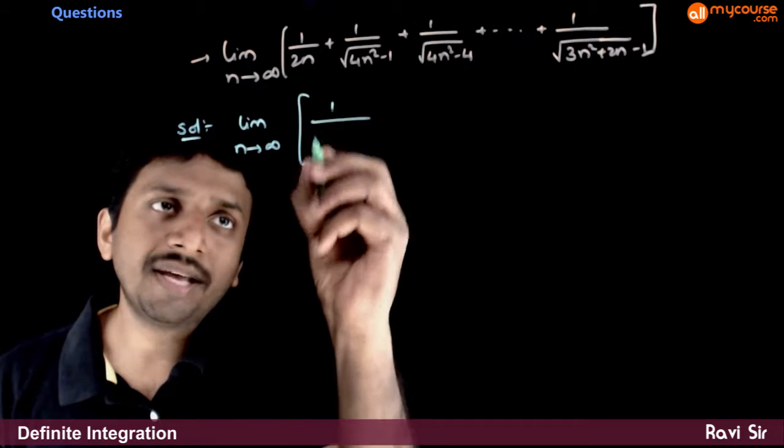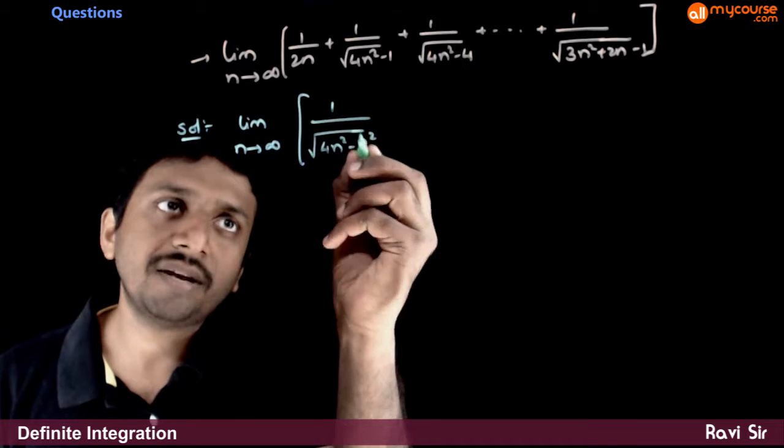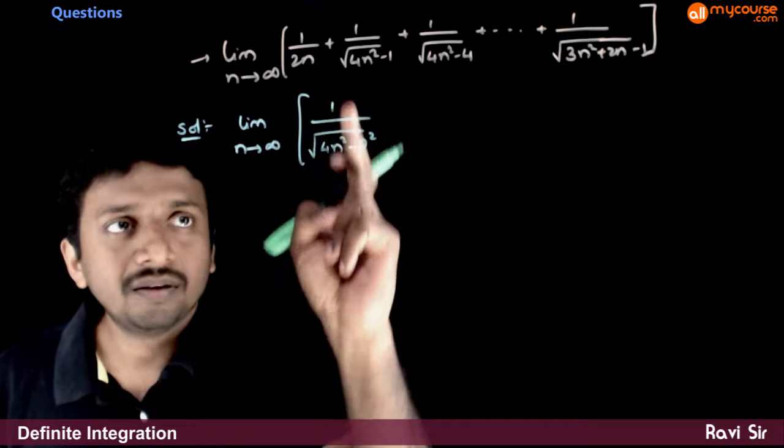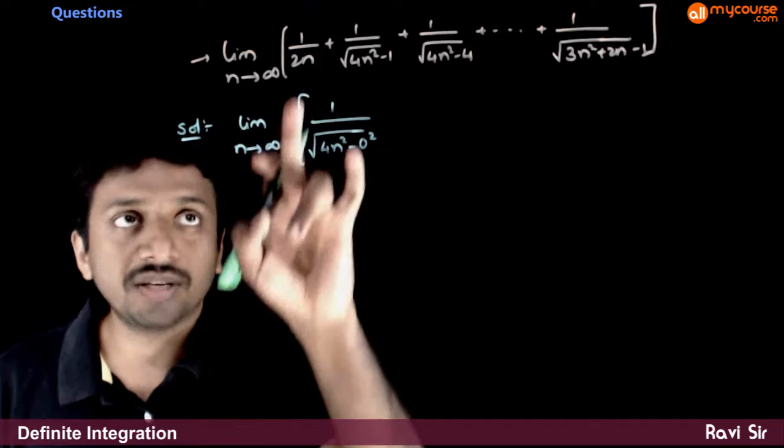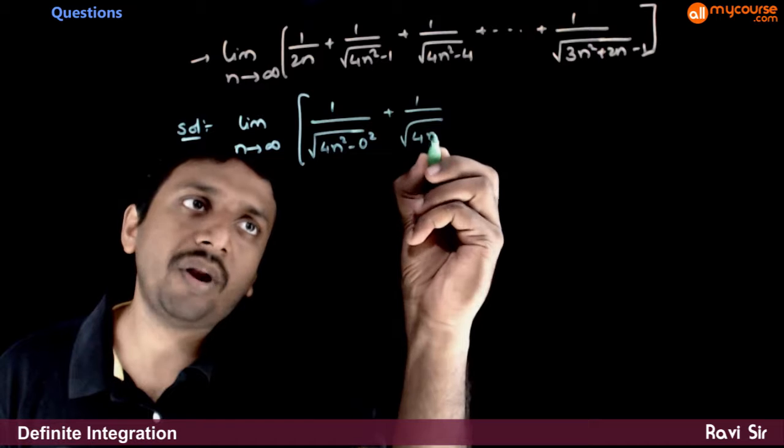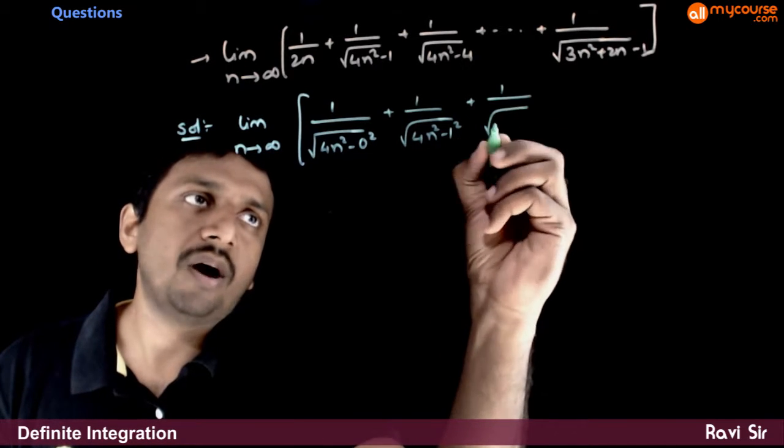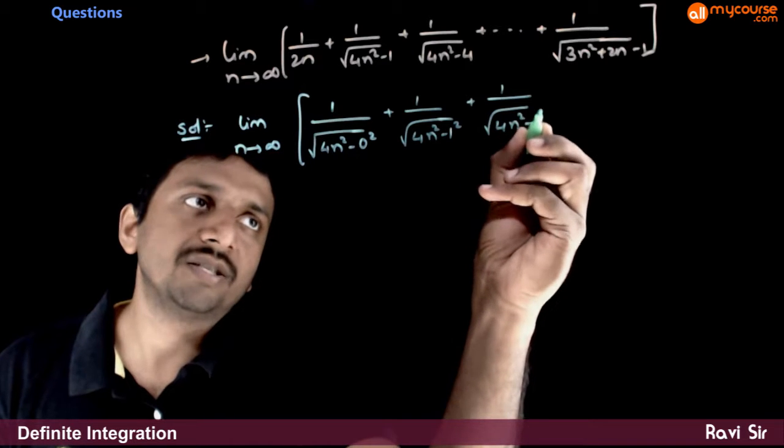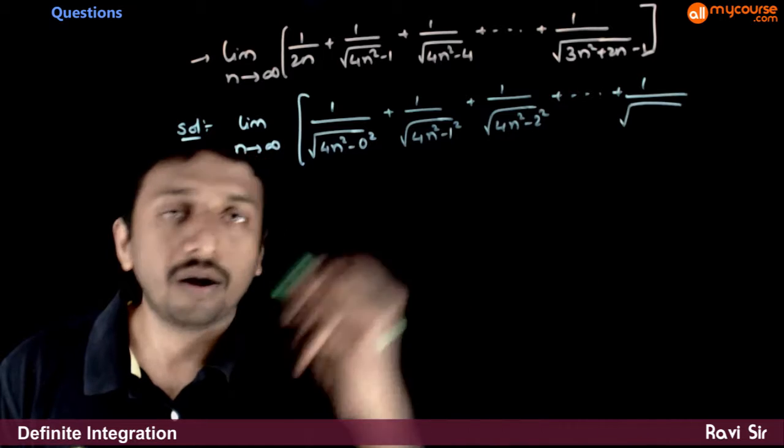1 by 2n can be written as root of 4n square minus 0 square. 4n square minus 0 square is 4n square. Root of 4n square is 2n plus 1 by root of 4n square minus 1 square plus 1 by root of 4n square minus 2 square plus so on up to 1 by root of...